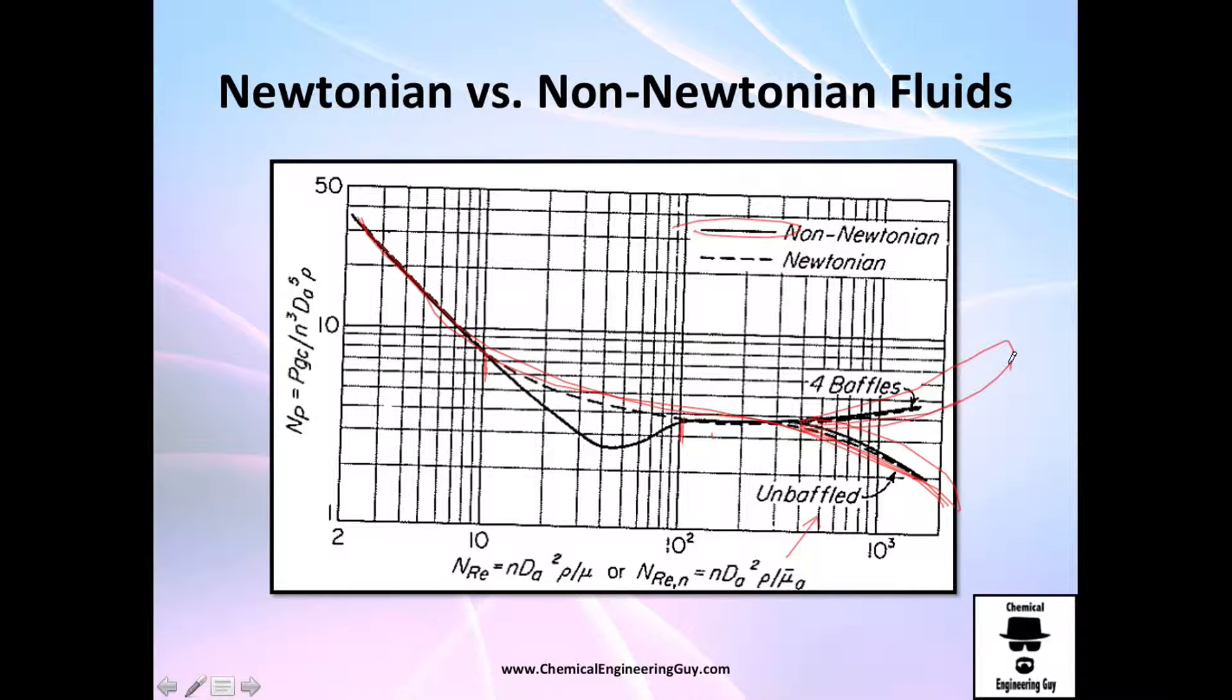But once you get the baffles they deviate. Actually, the strongest deviation is when they are in laminar flow. Turbulent flows are pretty similar deviations, and of course you need to calculate for the non-Newtonian fluid and for the Newtonian fluid.